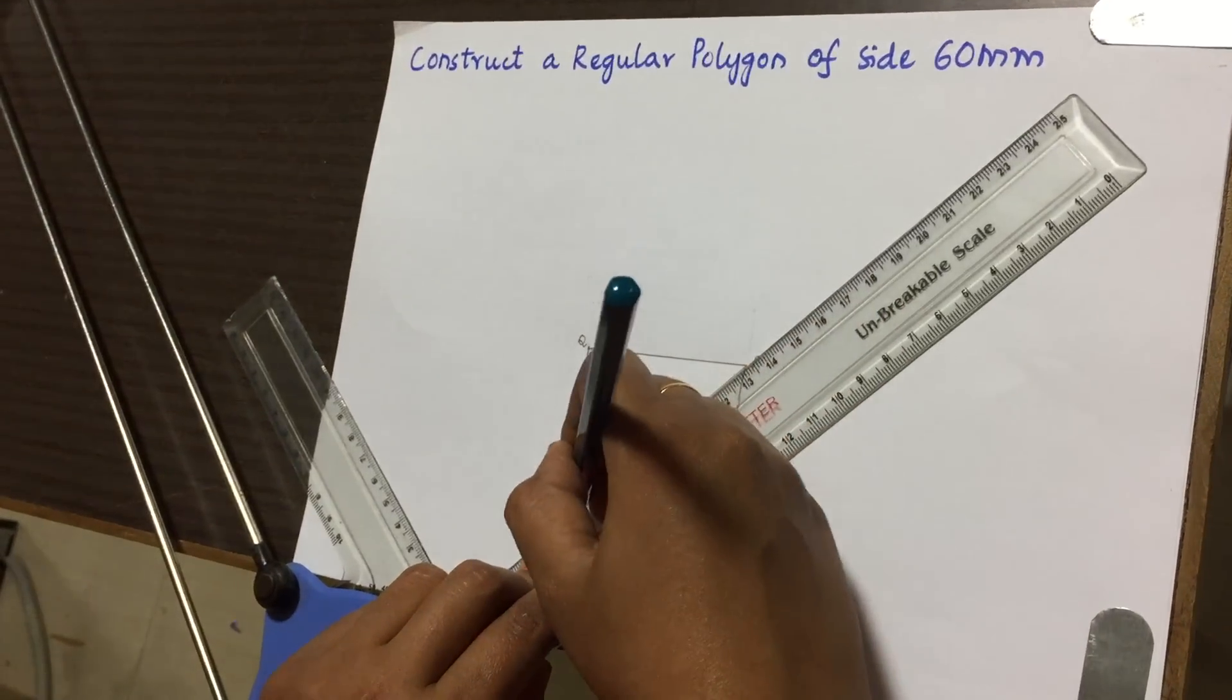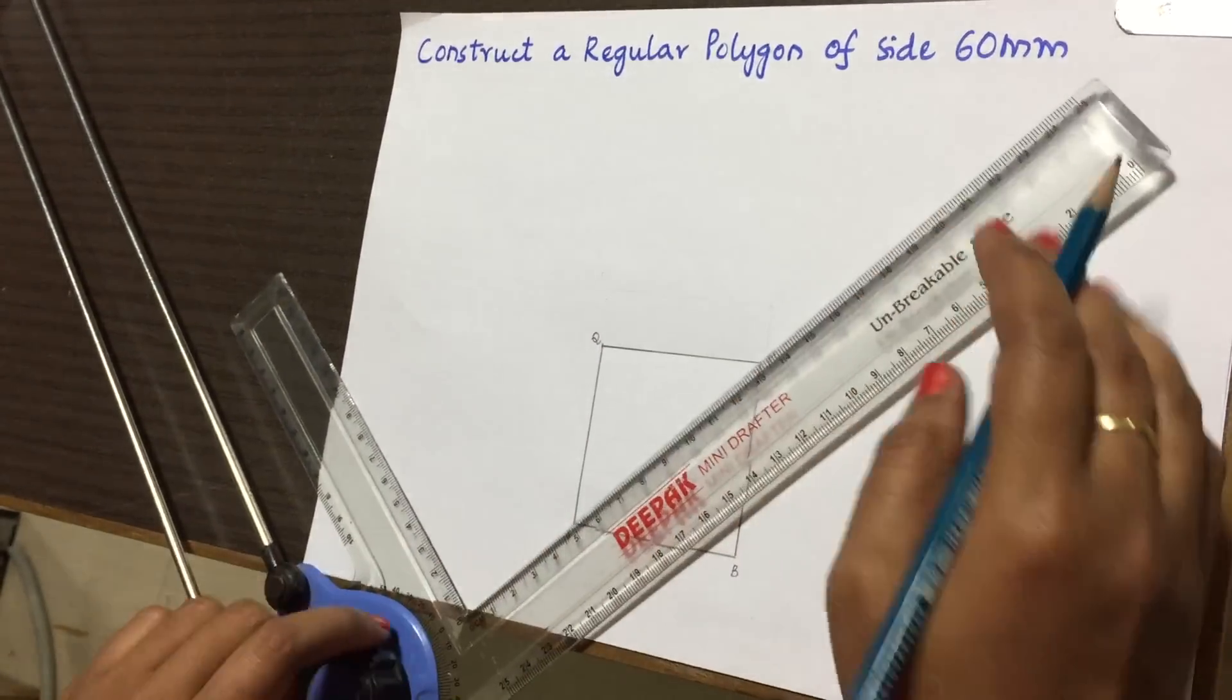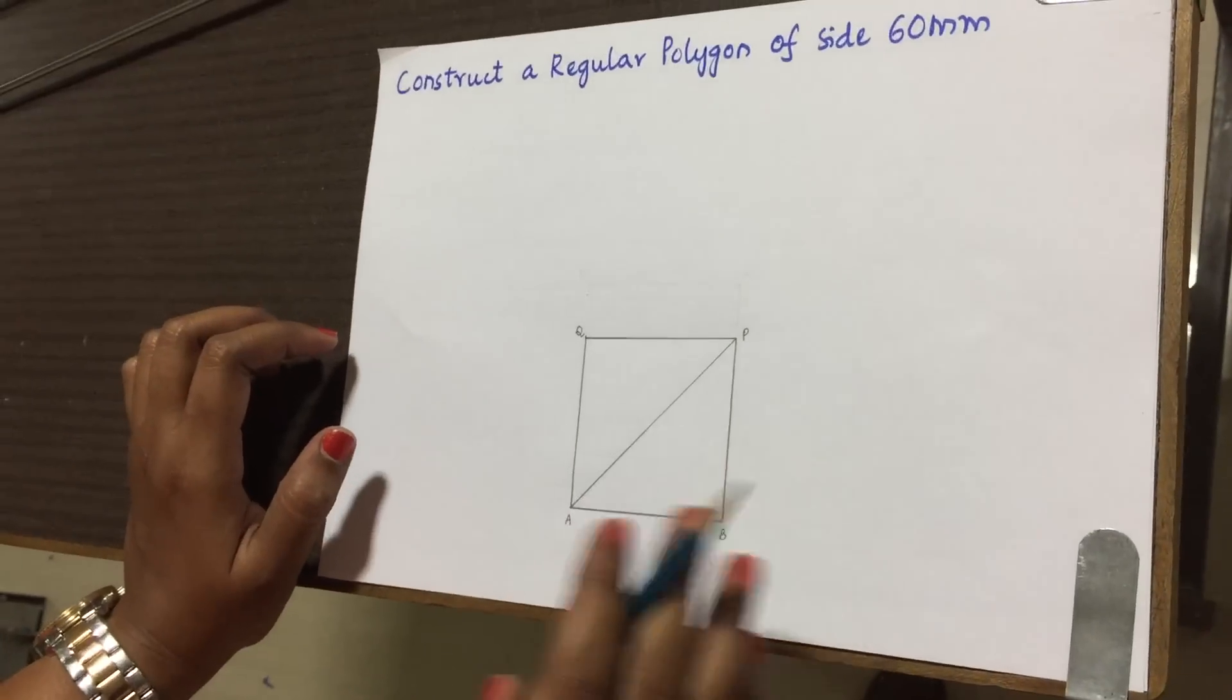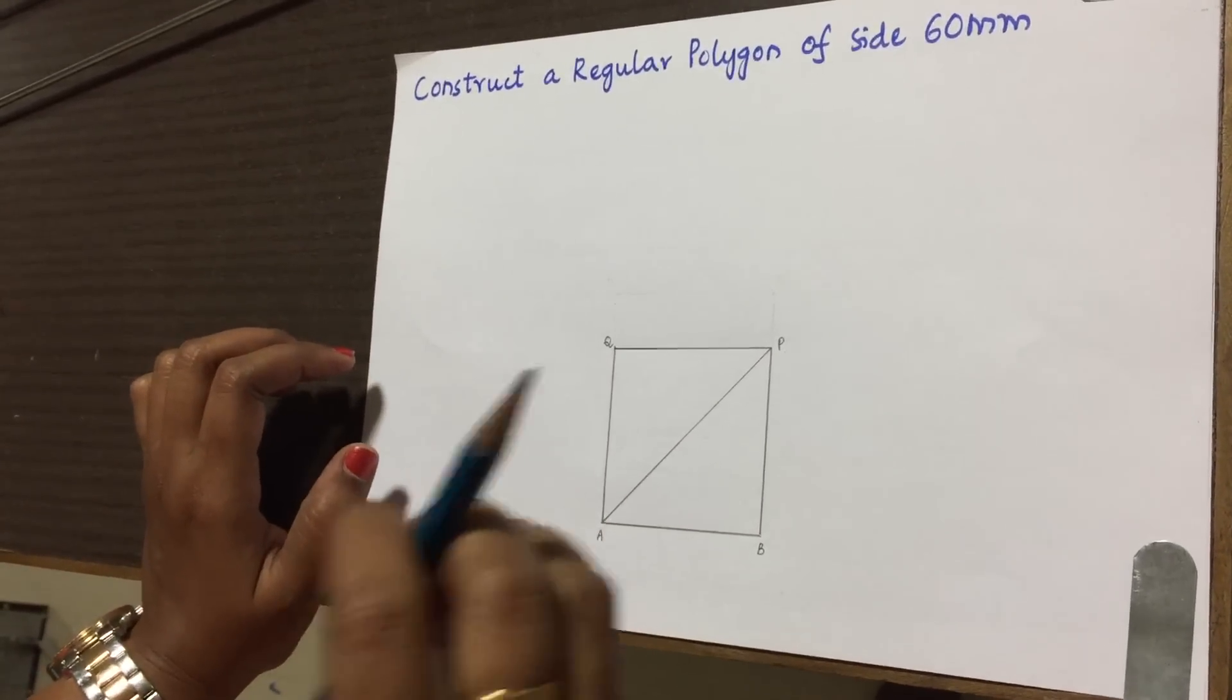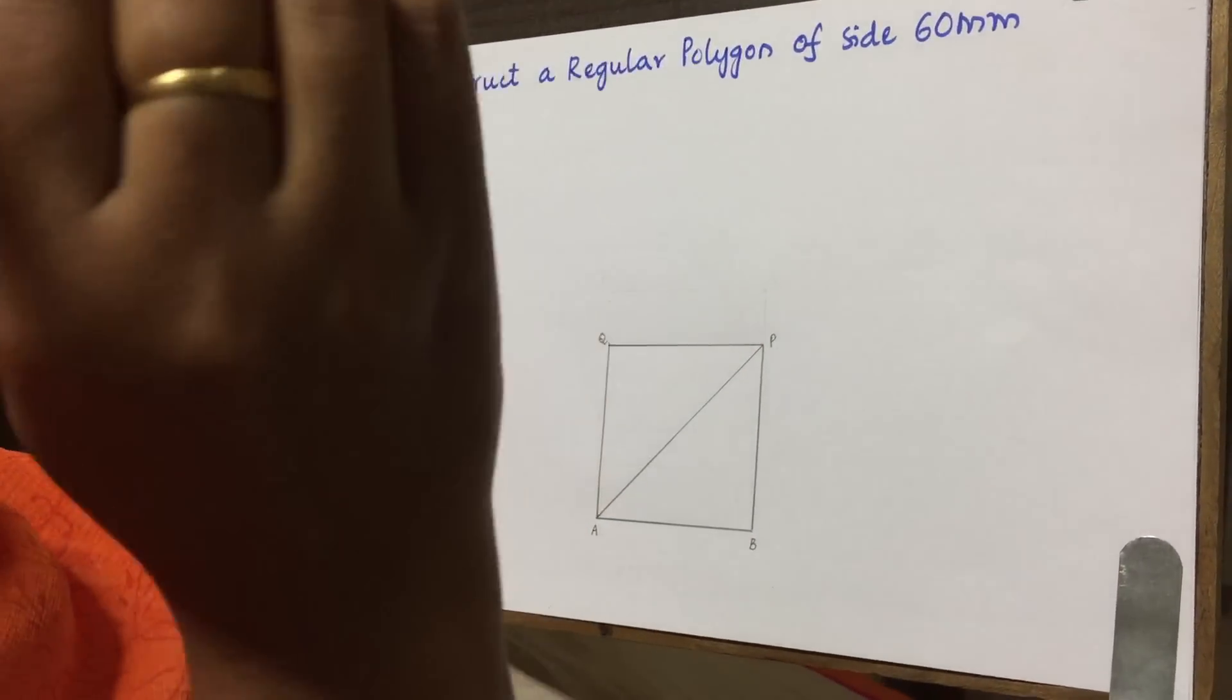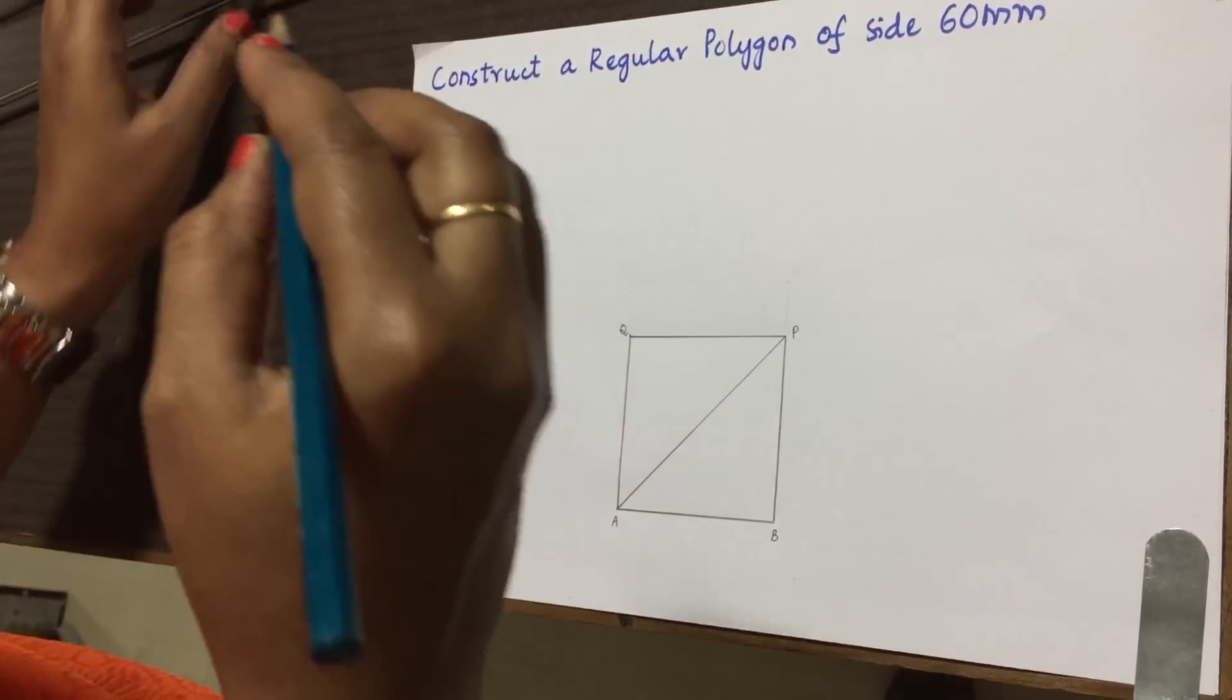All the lines should be very light. Here we are drawing just a polygon. So only the polygon should be highlighted. All other lines should be very light. For that we have to definitely use some 2H or 3H pencils.